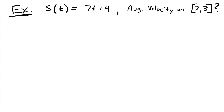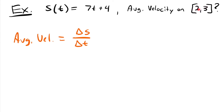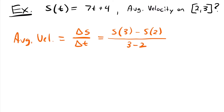We know that the average velocity is equal to the change in position divided by the change in time. We'll plug each of these values of time into our position function, find the difference between them, and then find the difference between our times, because that would be the change in time. So this is equal to the position at time 3 minus the position at time 2, divided by 3 minus 2.